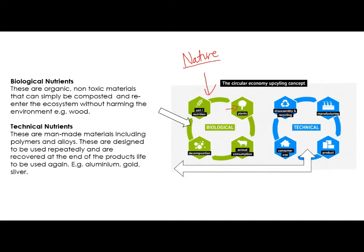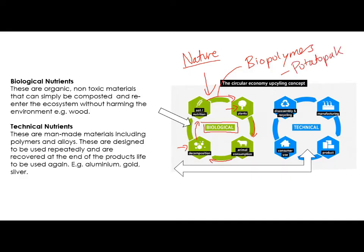For example, you have plants that grow — they could be consumed by animals, or the plants die and they decompose, they go back into the soil, which enables new plants and trees to grow because they are providing nutrition to the soil. This is the whole idea behind circular economy. If we can use as many biological nutrients as possible — things like biopolymers, especially things like potato-based packaging — things that come from completely natural sources can either go into the ground or animals can eat them, they'll go back into the soil to provide nutrition, and the circle continues.